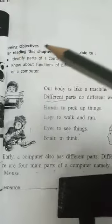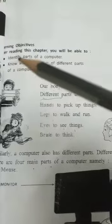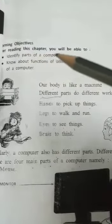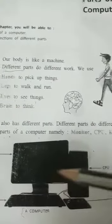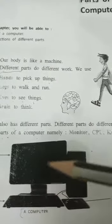Here are the objectives of the chapter. What are the objectives we will get after reading? Identify the parts of the computer. You will be able to tell the parts, what are these, the parts of the computer.